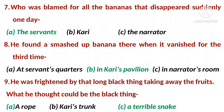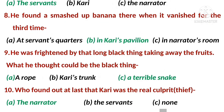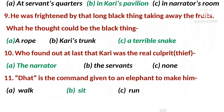Number nine: he was frightened by that long black thing taking away the fruits — what did he think the black thing could be? The right option is C — a terrible snake. Number ten: who found out at last that Kari was the real culprit? The right option is A — the narrator. Number eleven: what is the command given to an elephant to make him sit? The right option is B — sit.